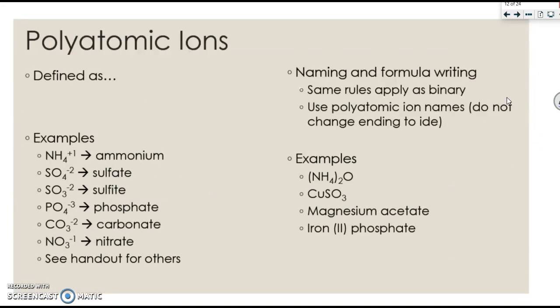So far, all we've talked about are binary compounds, ones that only contain two elements. Those are monatomic ions. We also have something called a polyatomic ion. You would know that a polyatomic ion was present in a chemical formula because you would see three or more elements in that formula.